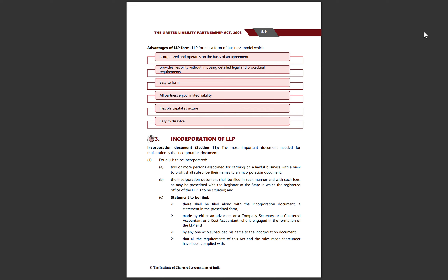For an LLP to be incorporated, 2 or more persons associated for carrying on a lawful business with a view to profit shall subscribe their names to an incorporation document. The incorporation document shall be filed in the prescribed manner and with prescribed fees with the Registrar of the state in which the registered office of the LLP is to be situated.